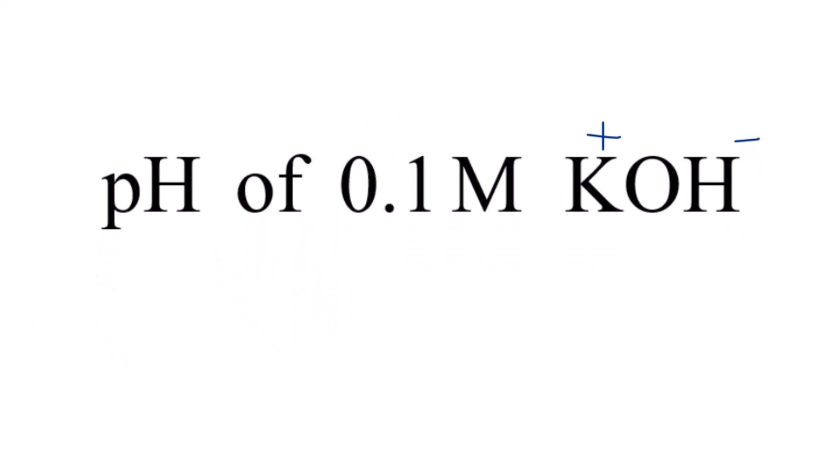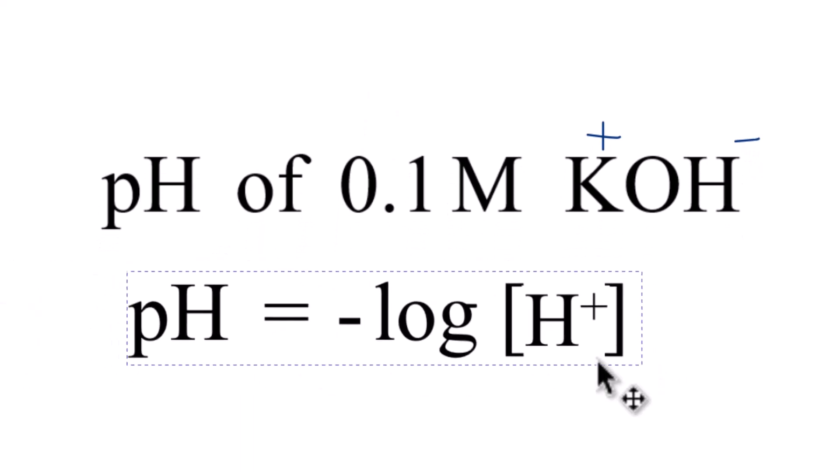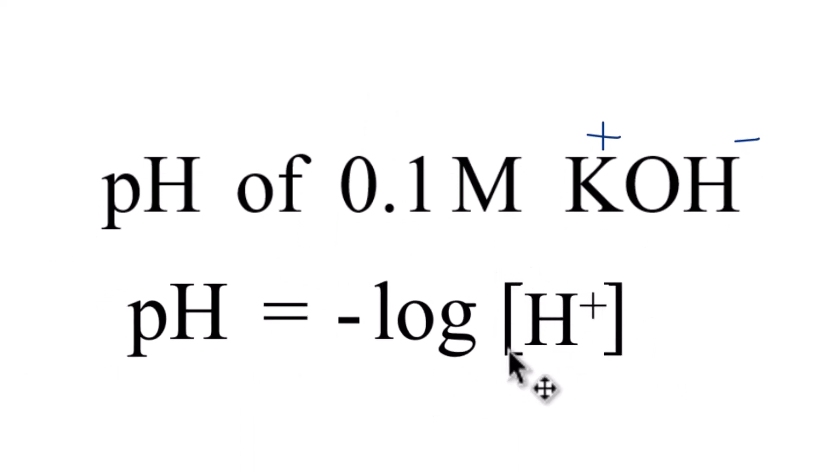You might want to use this equation: pH equals the negative log of the concentration of H+, the hydrogen ion. That's the H in pH. But there is no H+ here. It's OH-, the hydroxide ion, because this is a base, not an acid.